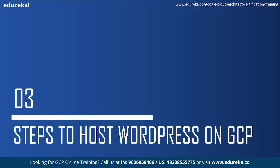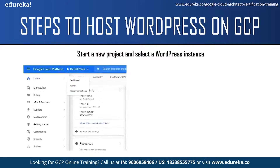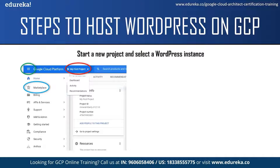Now let us move on to the steps to host WordPress on GCP. The first step is to sign in to your Google Cloud console. If you are new, you can sign up for an account by providing your address and credit or debit card details. Next, you have to create a new project in Google Cloud — you will find the project selector on the top left corner. The next step is selecting a WordPress instance. Go to the navigation menu on the left and select Marketplace. Google Cloud Marketplace allows you to quickly deploy functional software packages that run on Google Cloud, without needing to manually configure software, virtual machines, storage, or network settings.